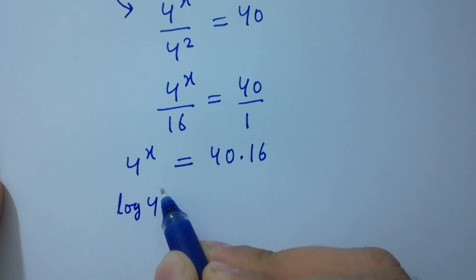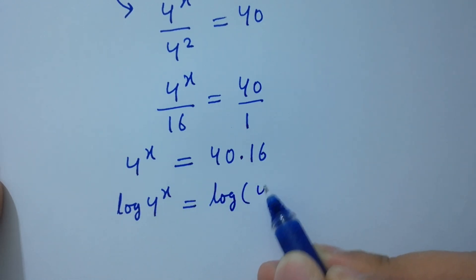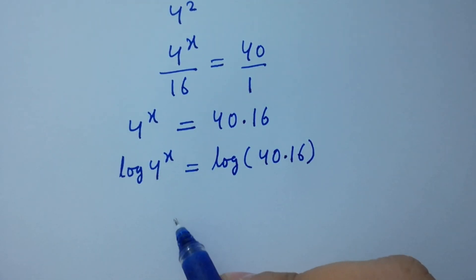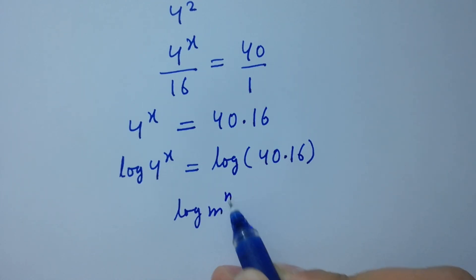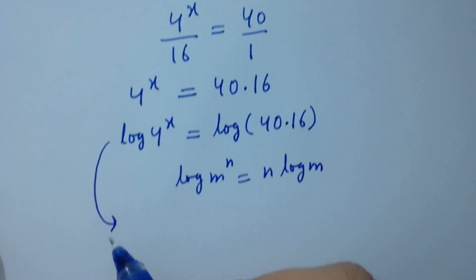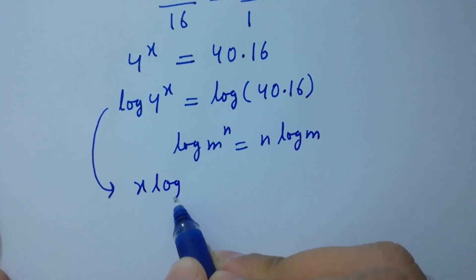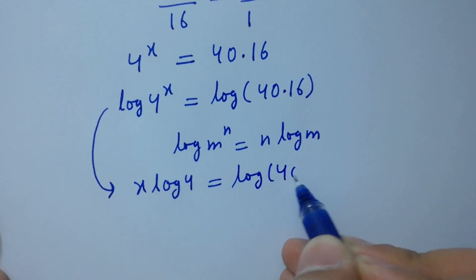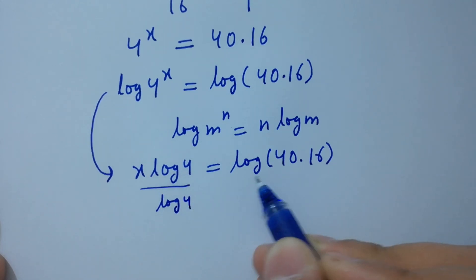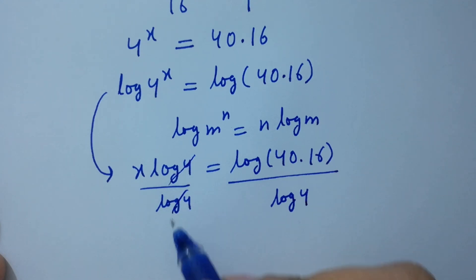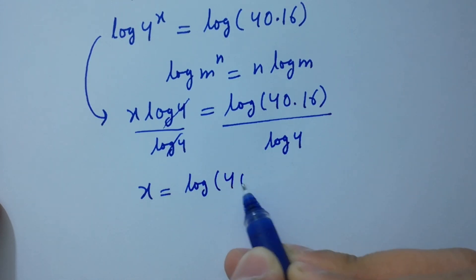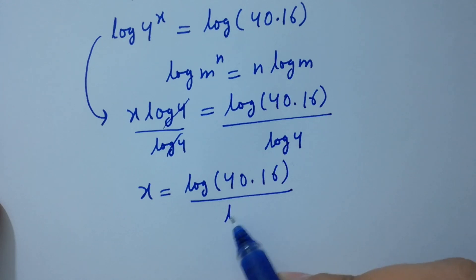Log of 4 to the power x equals log of 40 times 16. As we know, log m to the power n equals n log m. So we have x log 4 equals log of 40 times 16. Divide by log 4 on both sides — log 4 and log 4 cancel — giving x equals log(40 × 16) over log 4.